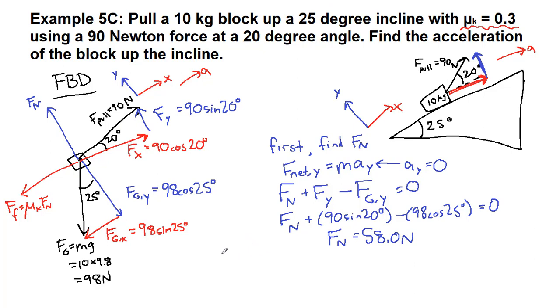So now we're trying to find the acceleration. So we'll do that the net force in the x direction is mass times the x acceleration we're looking for. And now we see we've got three forces, the x component of our pull, the x component of gravity, and friction.